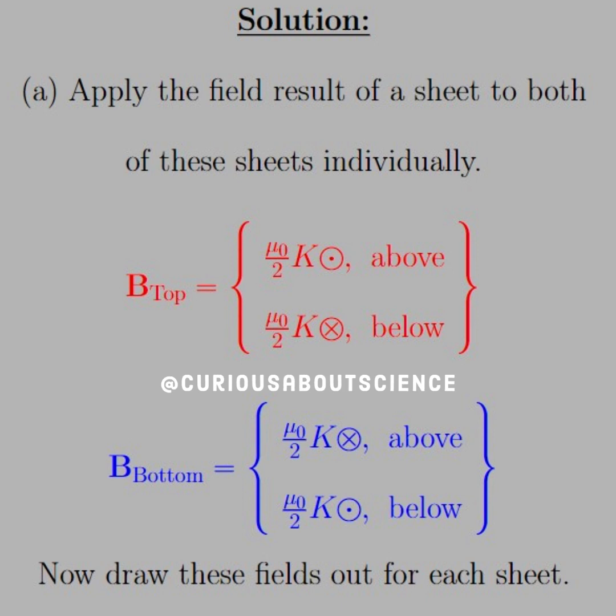but going into the page when we're below the plate. Now when we switch the sign of the charge distribution sigma, then the direction is switched, so we see that above is going into the page, and for below it's coming out of the page for the bottom plate.